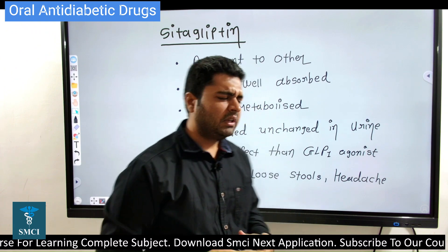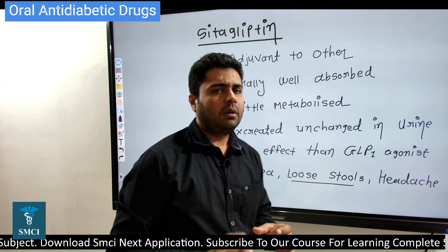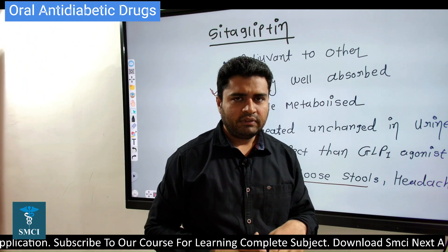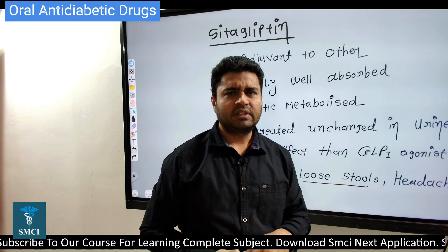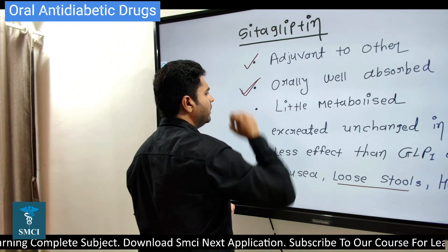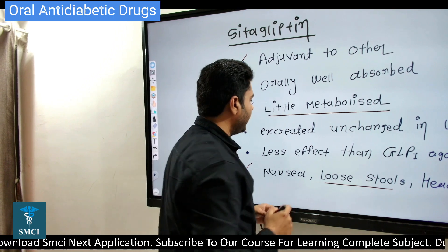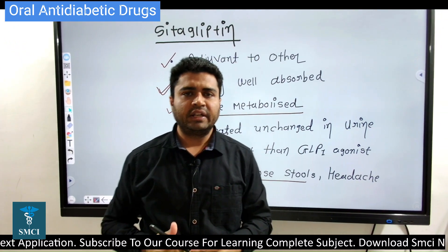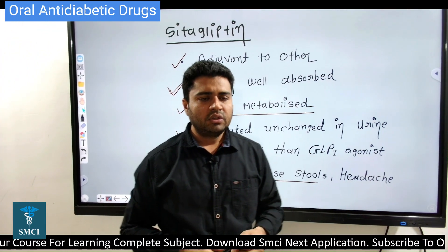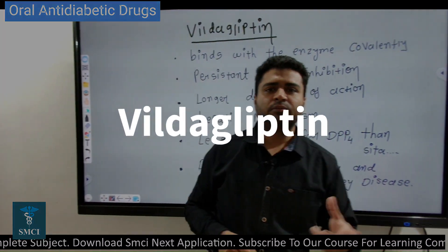Side effects reported with sitagliptin are very few — only nausea, vomiting, and sometimes loose stools. It is very well absorbed orally. It is mostly started along with sulfonylureas like glimepiride or glyburide, or with metformin as an adjuvant. It is minimally metabolized and excreted unchanged in the urine, making it safer in patients with renal as well as hepatic impairment.